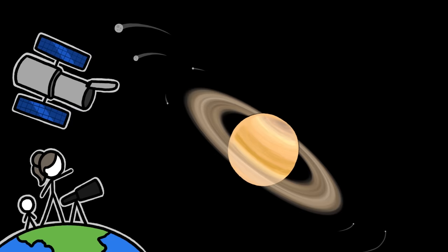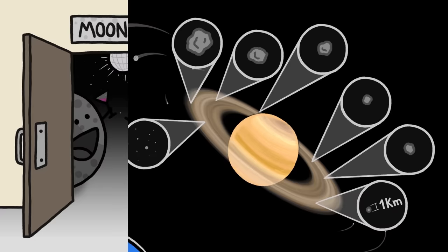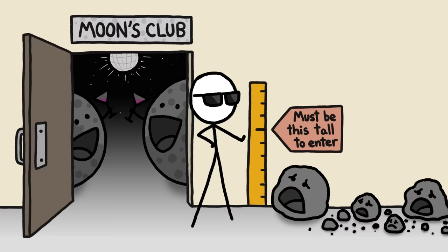We've already identified more than 60 increasingly small moons orbiting Saturn alone. Some of which are essentially kilometer-wide rocks hiding in its rings. It's inevitable that we'll keep identifying ever smaller individual chunks orbiting planets. So if we don't set some lower limit on moon sizes, are we willing to think of each of the billions of tiny rocks and dust particles in Saturn's rings, and every last speck of dust orbiting the Earth, as moons?